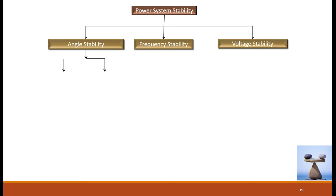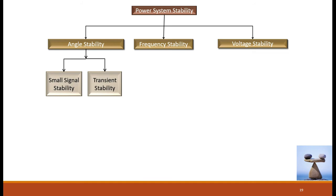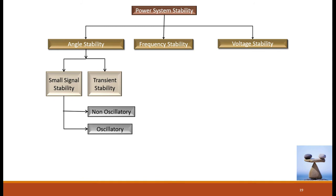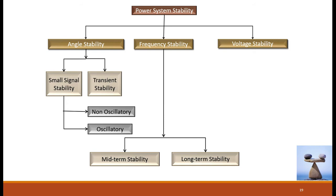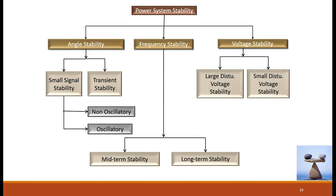Under angle stability studies we have got small signal stability, that is steady state stability, and transient stability. Under small signal stability it is classified once again into two types: oscillatory and non-oscillatory small signal stability. Under frequency stability we have got mid-term stability and long-term stability, whereas in the case of voltage stability we have got large disturbance voltage stability and small disturbance voltage stability.